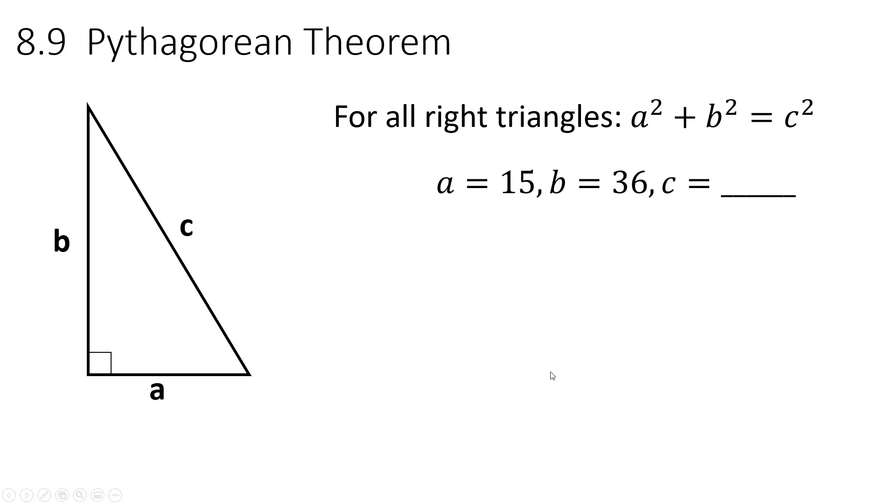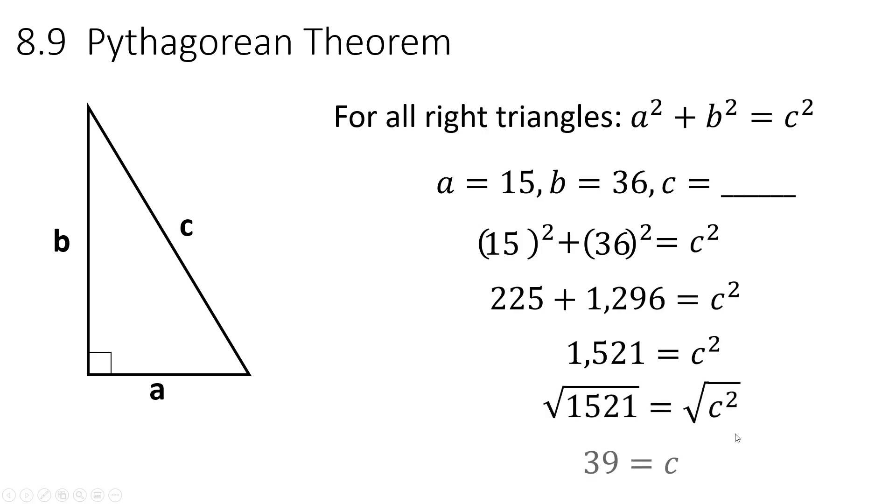We're going to do some Pythagorean theorem here. So A, B, C. A and B are the legs. C is the hypotenuse. A and B, they gave us. We need to figure out C. You use the formula. Plug in what you know. So you plug in your A, you plug in your B. You work them out. You add them up. So now we have C squared equaling 1,521. If we take the square root of both of them, we'll figure out what C is. So if you take the square root of each side, you get 39 for C. Here we go to the next one.